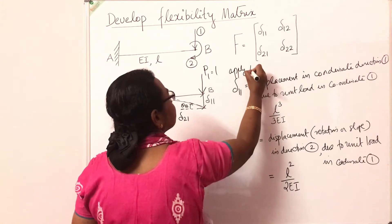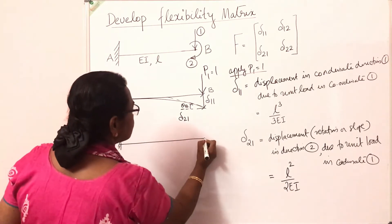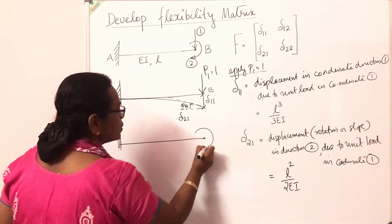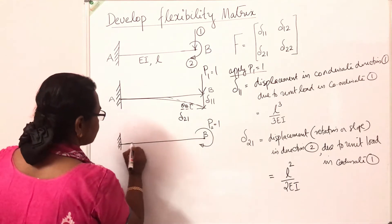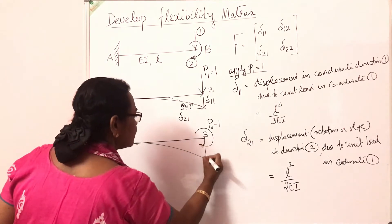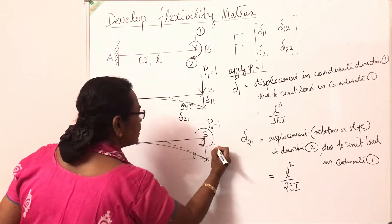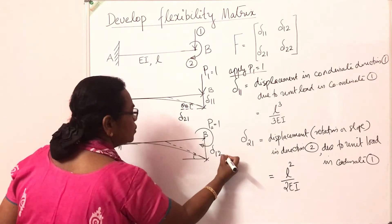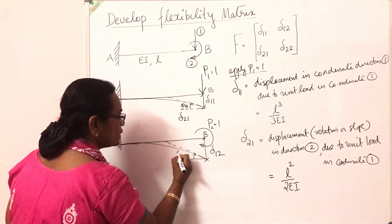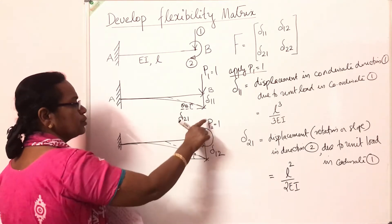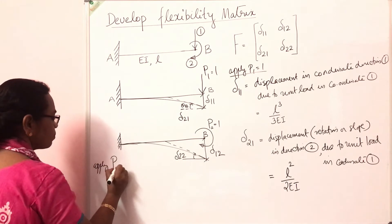This first column is obtained by applying P1 = 1. Similarly, now let us apply P2 = 1 — that means at point B we apply a unit moment in this direction. The beam deflects. The vertical deflection as well as the slope at B are produced. This vertical deflection is the displacement in direction 1 due to unit load at coordinate 2, which is δ12, and the slope is δ22 — the displacement in direction 2 due to unit load at coordinate 2.